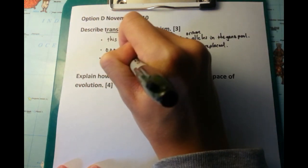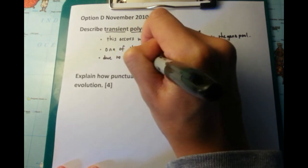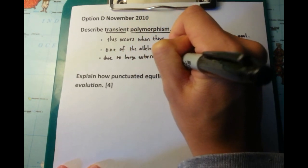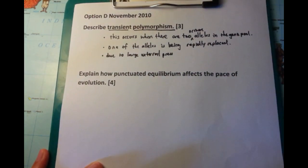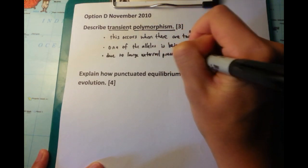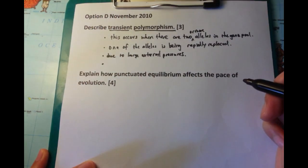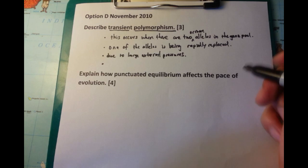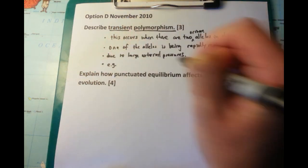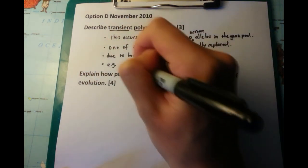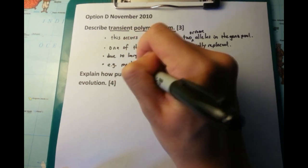Now, one of those alleles is being rapidly replaced. That's why it's transient. Transient means that it's only there temporarily. In the case of the moth, the white moth allele was being replaced by the black moth allele, because the black moths were more well adapted to the polluted environment than the white moths.